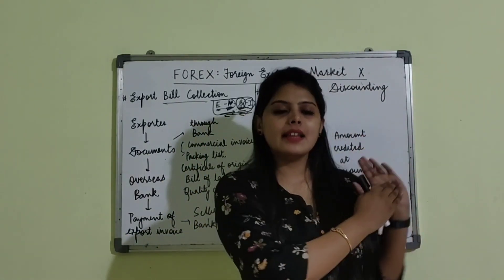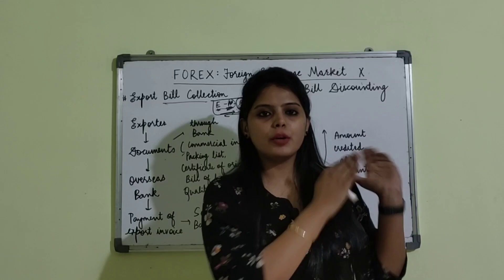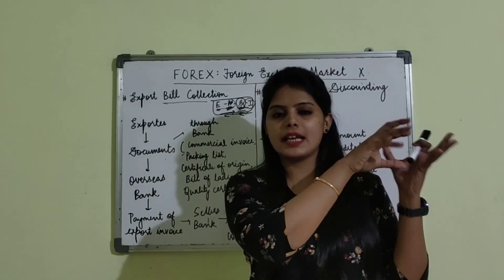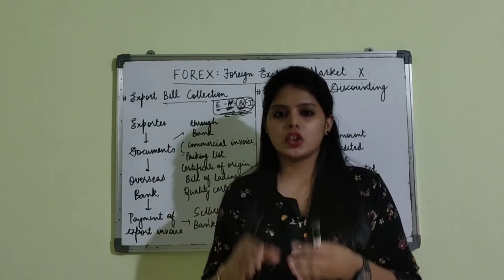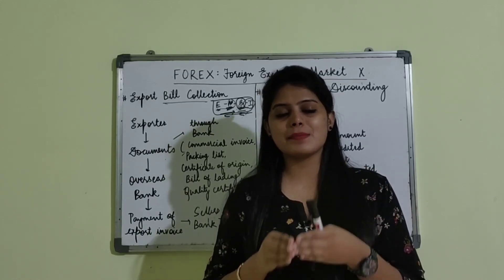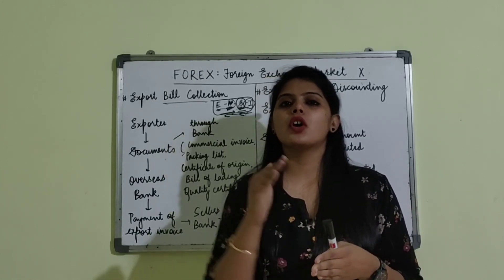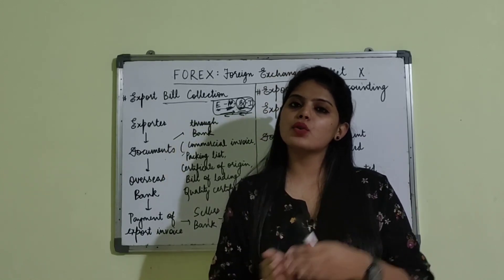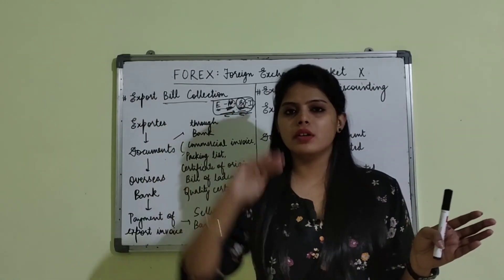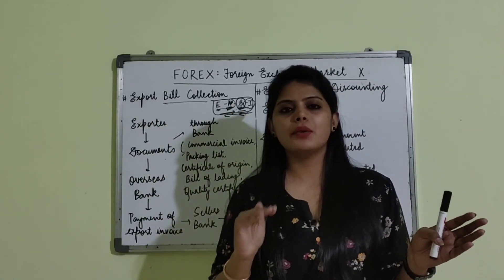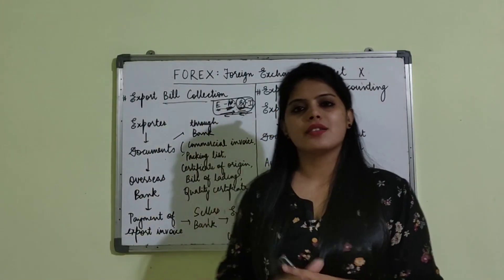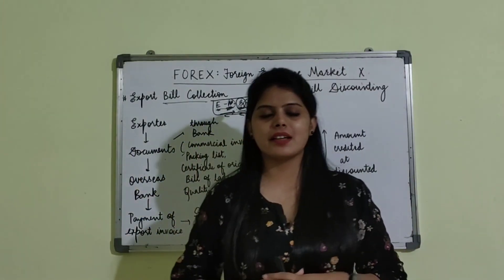Whereas in the case of export bill discounting, the exporter gives the export bill documents to its authorized bank, and the authorized bank directly credits the amount to the exporter's account. After that, it will receive the amount from the importer through the normal chain. This was the basic difference between export bill collection and export bill discounting.